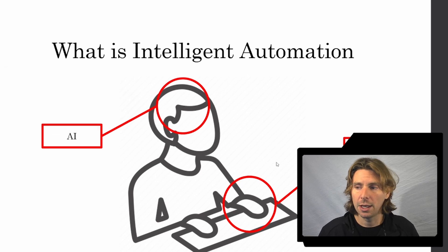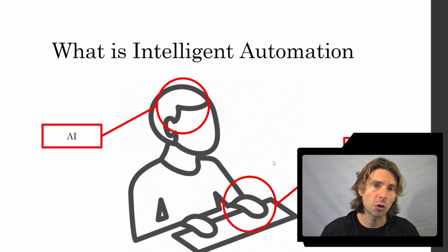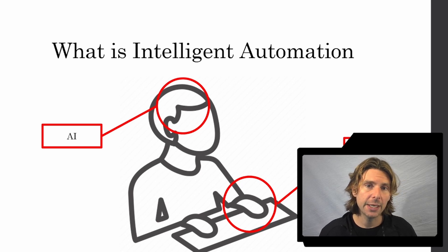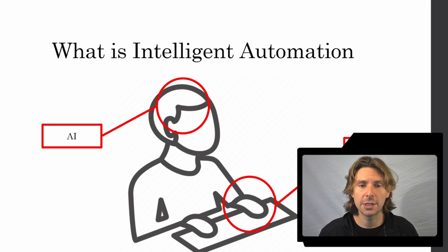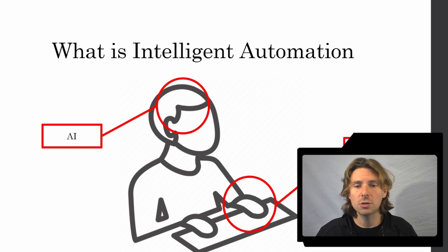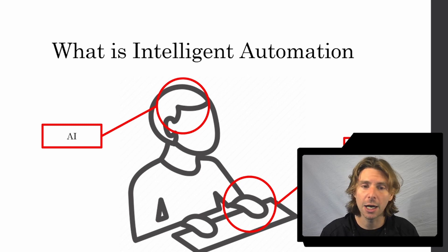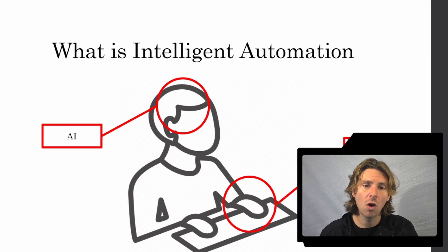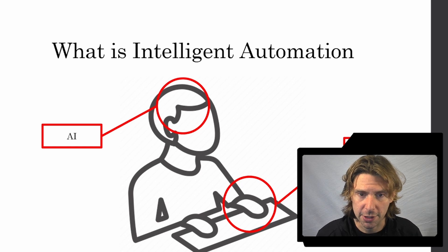That means that we can automate more of the same process, make it better, enhance it, and also automate processes end-to-end. Now that is very important to understand because right now we are learning just to automate things that are RPA related. However, we're going to see examples of where we're going to automate AI related processes as well.